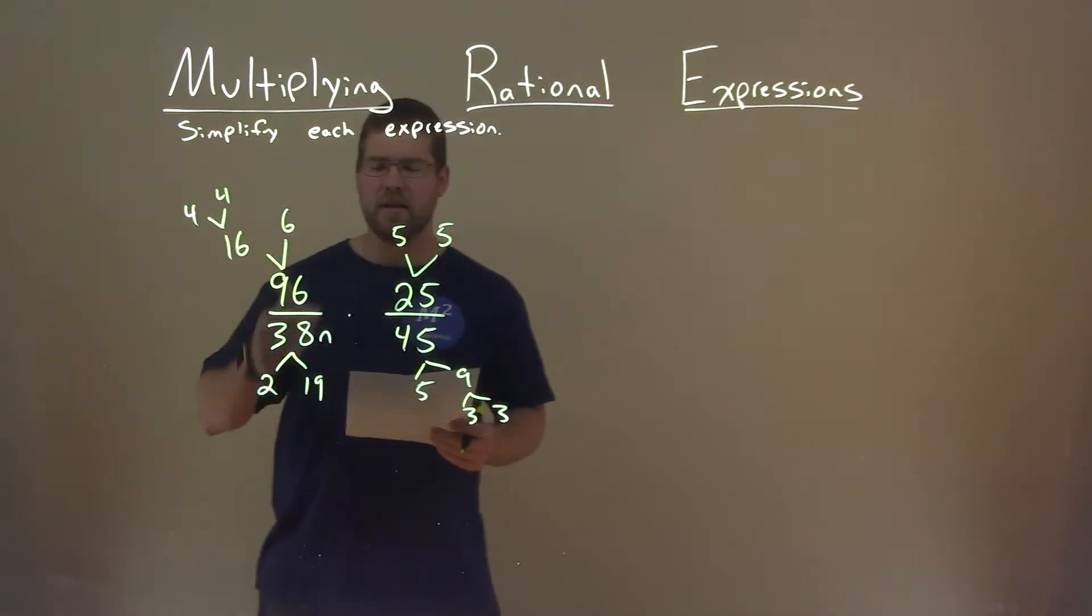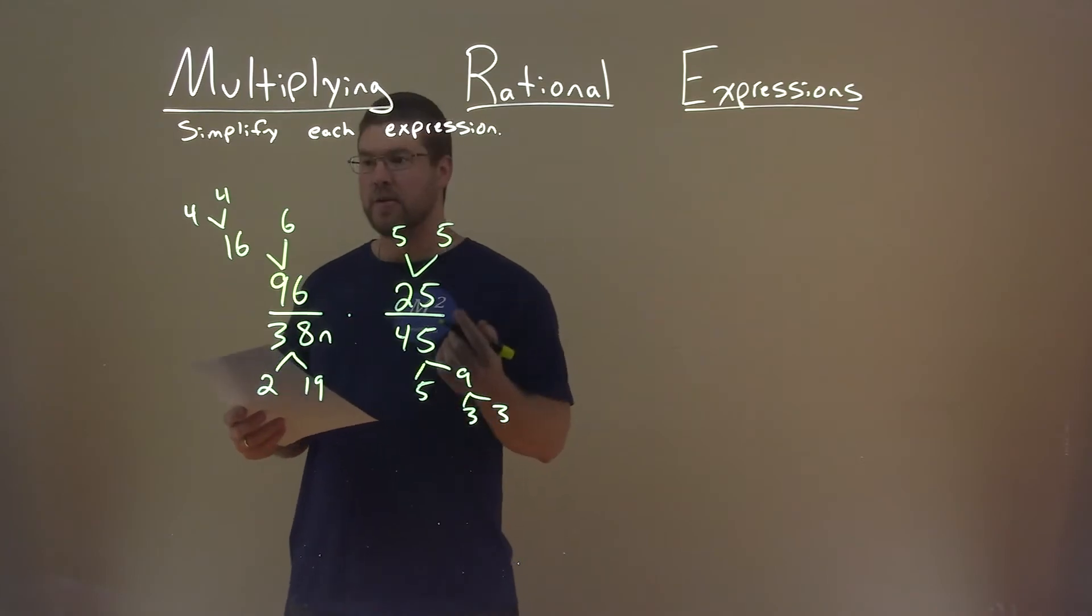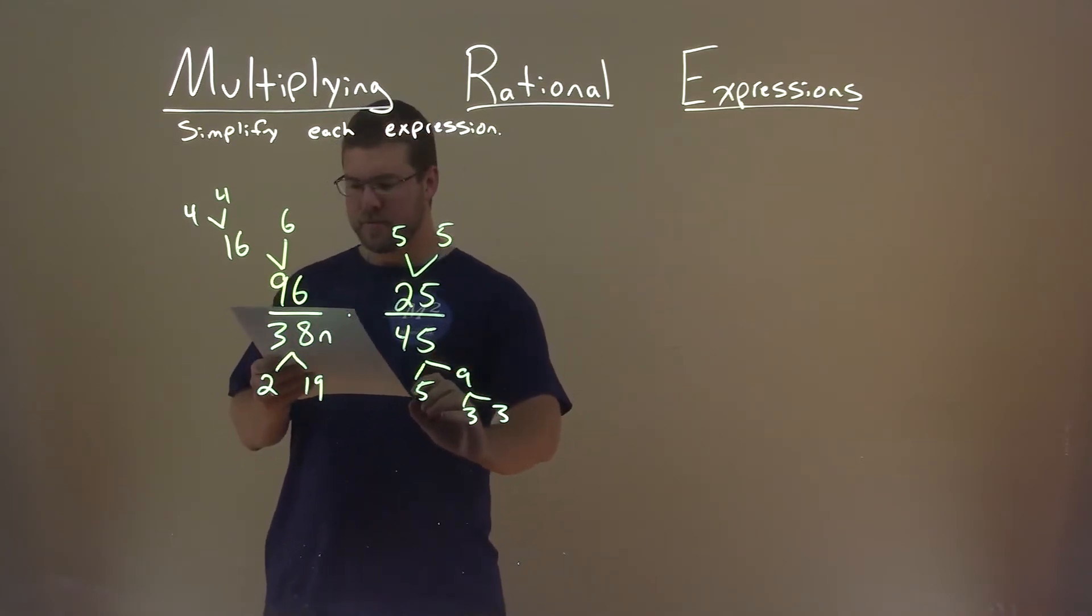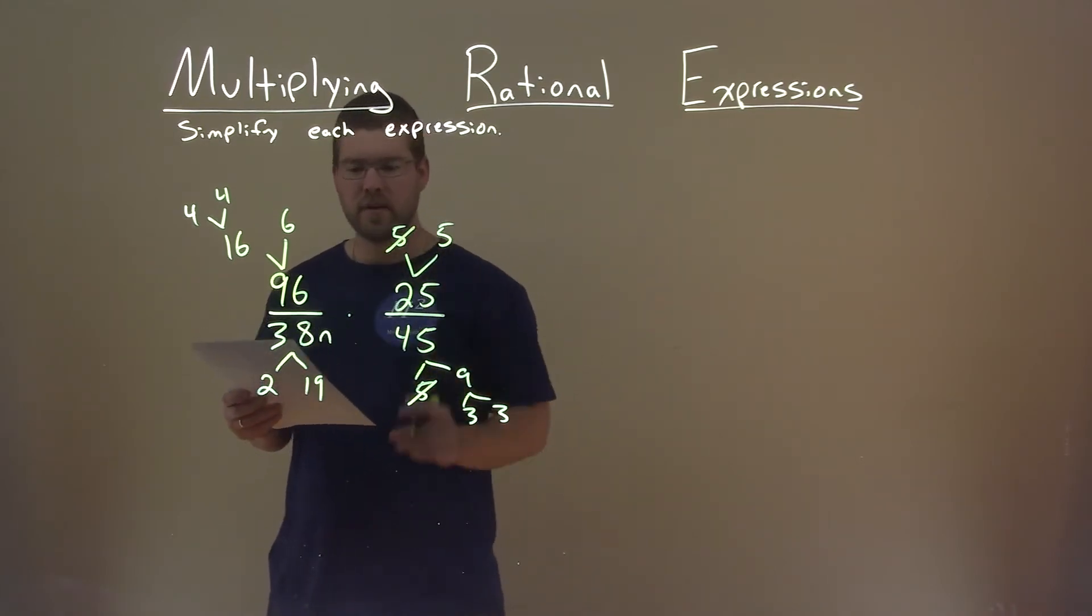Now we're going to see if there's anything that can cancel out from a factor tree. The 5's here, right? 5 and 5 cancel.